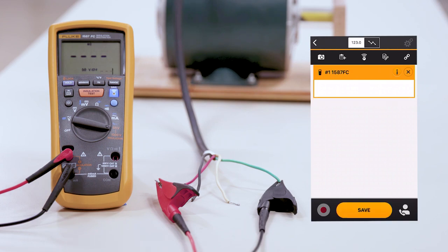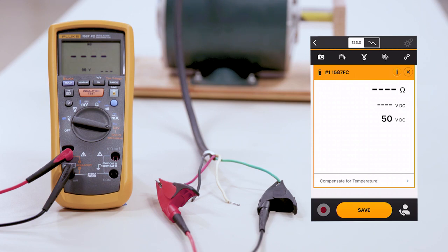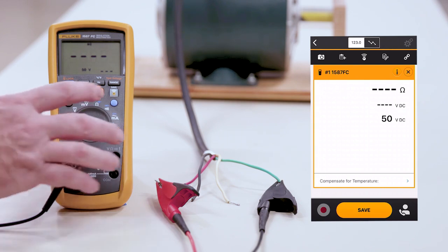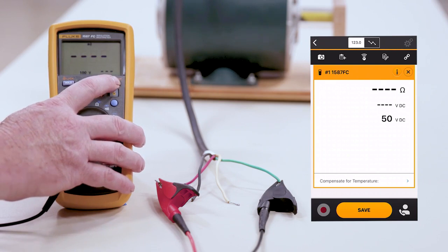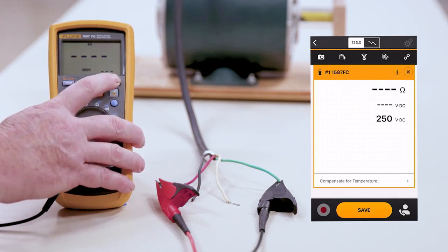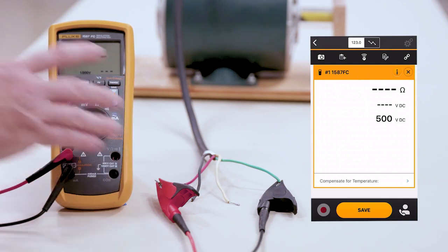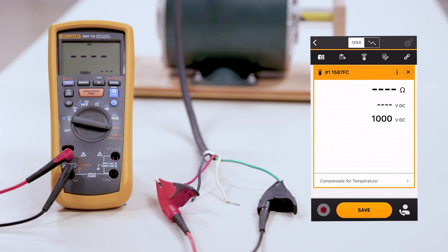Typically in an insulation test, we want to double the value of whatever the rating is for voltage. In this case, this motor is a 480 volt motor. We're going to change the range of our insulation meter to 1000 volts. By doing that, you'll hit the range button.